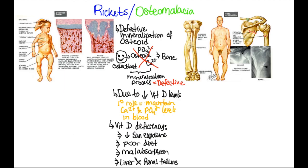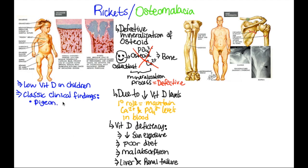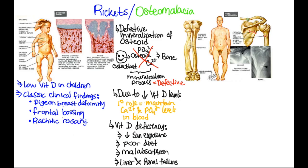Rickets is low vitamin D in children. Classical clinical findings of rickets include pigeon breast deformity, which is inward bending of the ribs with anterior protrusion of the sternum; frontal bossing, which is a prominent forehead due to osteoid deposition on the skull; rachitic rosary due to deposition of osteoid at the costochondral junction; and bowing of legs in ambulating children because of weakening of long bones as they grow from the growth plate.